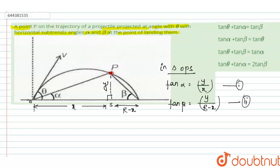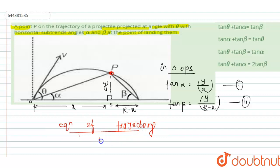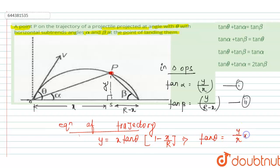Since this point is on the projectile trajectory, the equation of the trajectory gives y equals x·tan(theta)·(1 minus x/r). From here, we can find tan theta: tan theta equals (y/x)·(r/(r minus x)). This is equation three.